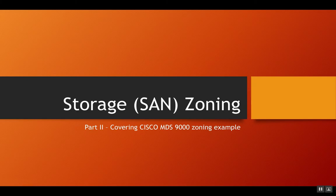Hi all, hope you guys are doing well. This is on popular demand — I'm coming up with the storage or SAN zoning part 2. In this I'll be covering an example with Cisco switch. In my previous video, whose link I have shared in the description, I talked about the concepts of zoning and shared an example of Brocade zoning. I've been getting a lot of mails that I should be covering MDS zoning, and since I don't have it currently in my environment, I'm sharing the steps using command line to go through Cisco zoning.